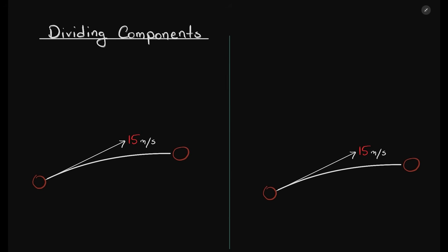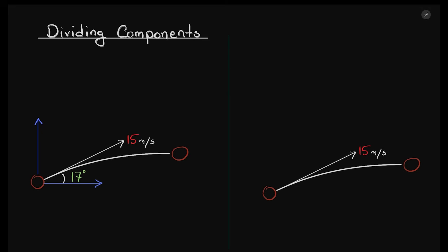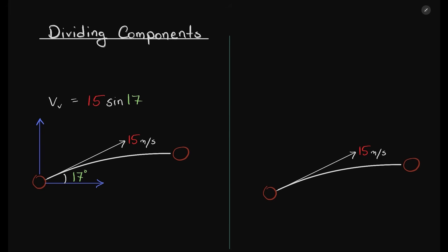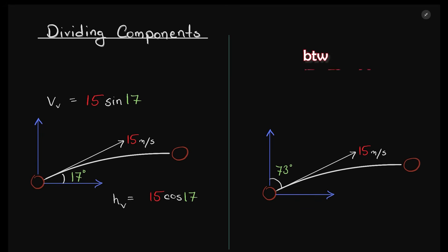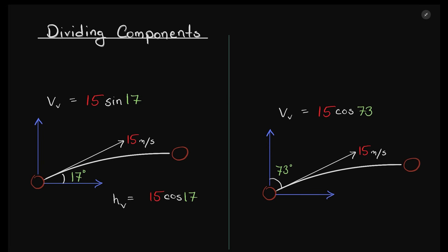As this ball is moving at 17 degrees to the ground, the vertical component would be 15 sin 17 and the horizontal component will be 15 cos 17. So if we change the angles on the right-hand diagram, we can see the vertical component becomes 15 cos 73 and the horizontal component becomes 15 sin 73. The side closer to the angle always has cos — that's a neat trick. In the calculator, 15 sin 17 and 15 cos 73 have the same value.